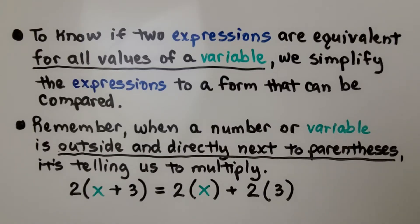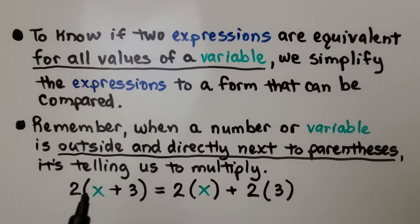To know if two expressions are equivalent for all values of a variable, we simplify the expression to a form that can be compared. Remember, when a number or variable is outside and directly next to parentheses, it's telling us to multiply.